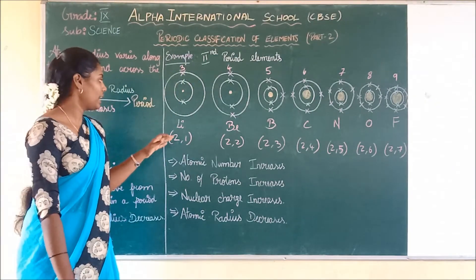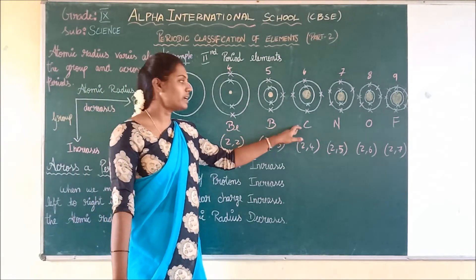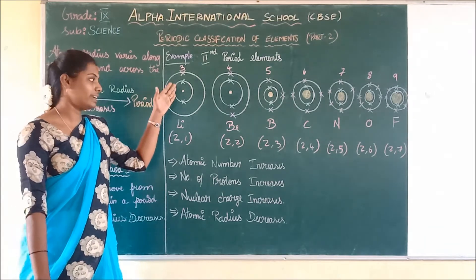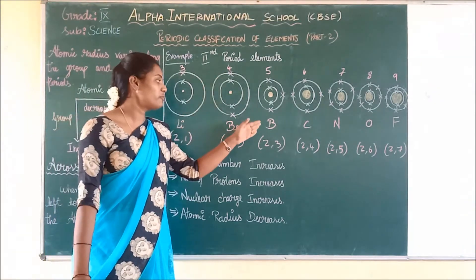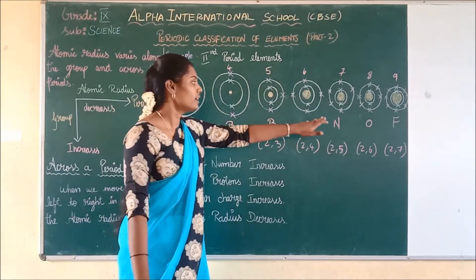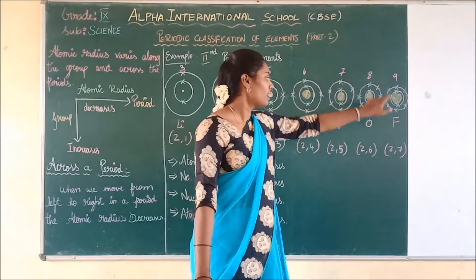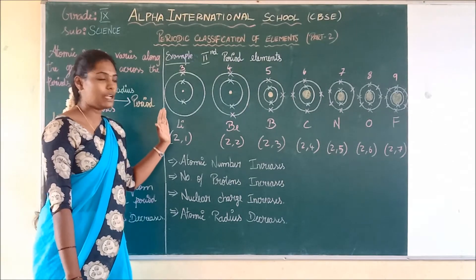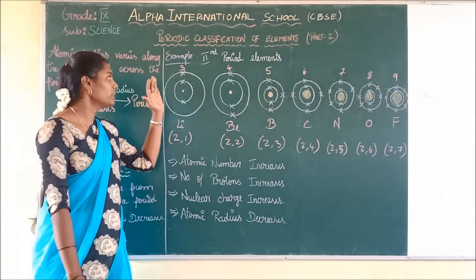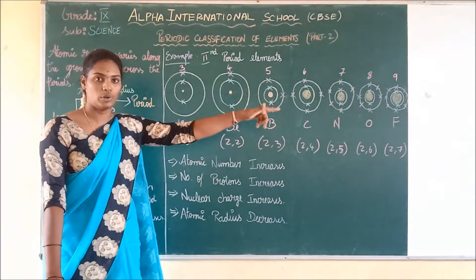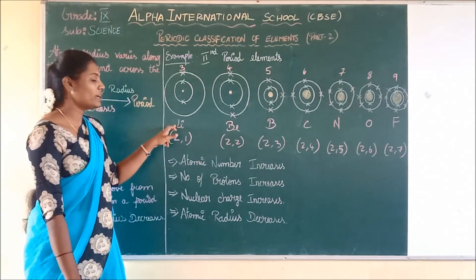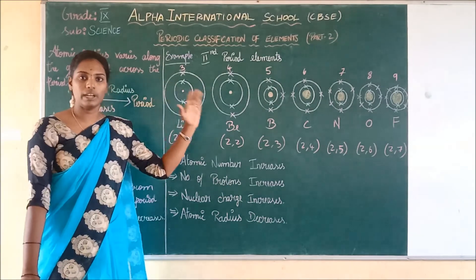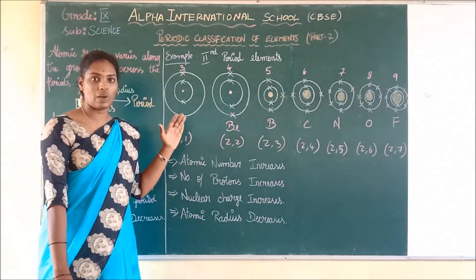In the second period we have lithium, beryllium, boron, carbon, nitrogen, oxygen, and fluorine. Their atomic numbers are 3, 4, 5, 6, 7, 8, and 9 respectively. So from left to right across the period, the atomic number keeps increasing — from lithium with atomic number 3 to fluorine with atomic number 9.